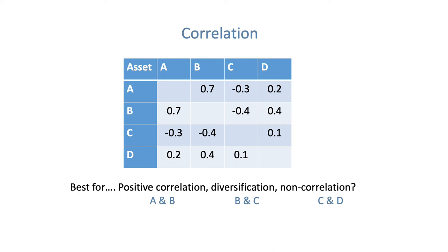For non-correlation, remember the tactic: pick the number closest to zero. The closest number to zero here — recognising the grid runs from minus 1 through 0 to plus 1 — is 0.1. Following our technique of moving across horizontally and up vertically, you should see that at 0.1, the closest number to zero, assets C and D are the ones you would combine to create non-correlation.